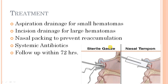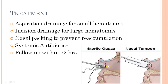Since septal hematoma is a collection of blood, it must be drained. A small hematoma can be drained by aspiration using a large-bore needle. For a larger hematoma, incision and drainage is required — an anterior-to-posterior incision is made parallel to the nostril. Pressure is applied to remove the entire hematoma, and suction is used. Care must be taken to prevent blood from flowing posteriorly and causing aspiration.